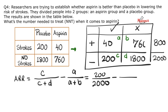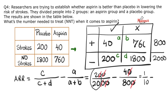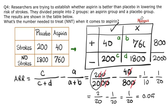Cancel zeros: 2 divided by 20 is 1 in 10, minus 4 out of 80 is 1 in 20. Finding common denominator: 2/20 minus 1/20 equals 1/20, which is 0.05 or 5% — that's the absolute risk reduction. Number needed to treat is the inverse: 1 divided by 1/20 equals 20.